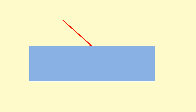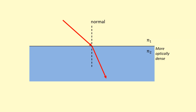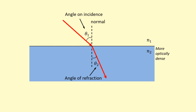Here we have light incident at a boundary between two mediums. Medium 1 has a refractive index of n1 and medium 2 a refractive index of n2. The second medium is more optically dense. We draw on the normal and expect the light to bend towards the normal. Theta 1, the angle between the incident ray and the normal, is called the angle of incidence, and theta 2 is the angle between the normal and the refracted ray.